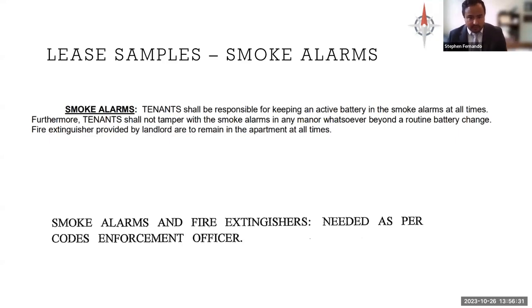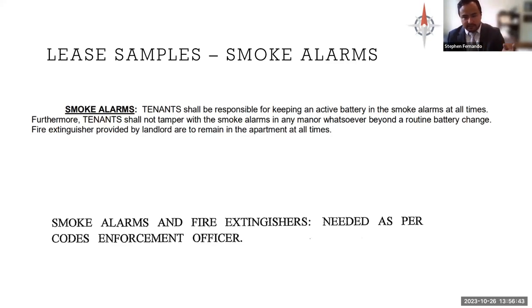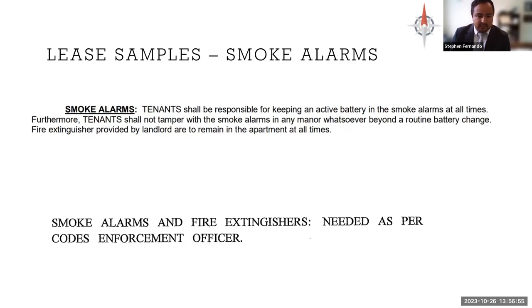Smoke alarms are a big thing and it's required that the landlord provide smoke alarms for obvious reasons. The first example clause waves that requirement, making it the tenant's responsibility to maintain batteries — that's not true; the landlord has to do that. Another clause simply says: 'smoke alarms and fire extinguishers: needed as per code enforcement officer' — which was an actual lease clause. It's not clear whether they're needed now because the code enforcement officer said so, or if they're just following general code enforcement. That's an example of a poorly drafted clause. Another college lease example waived the requirement that the landlord keep the property safe, crossed out with the tenant's signature — but it's not waivable because it's part of the warranty of habitability.